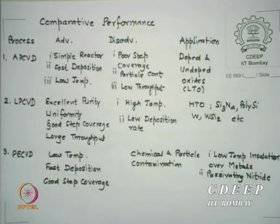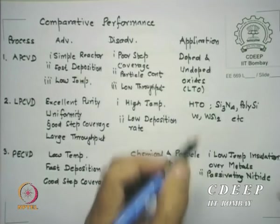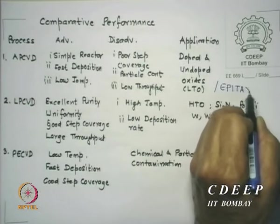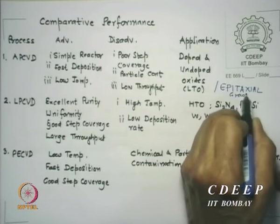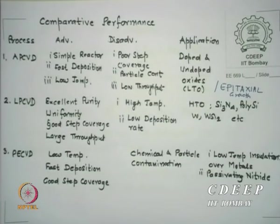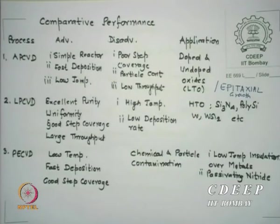APCVD can be used for doped and undoped oxides — called low temperature oxides (LTO). For epitaxial growth, APCVD operates at 1100 degrees — very high temperature because you want crystallinity. LPCVD — low pressure CVD — has excellent purity, very good uniformity, very good step coverage, and very large throughputs. The disadvantage is it is a higher temperature process with lower deposition rates, but it can do almost everything.